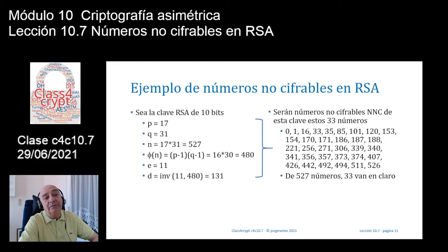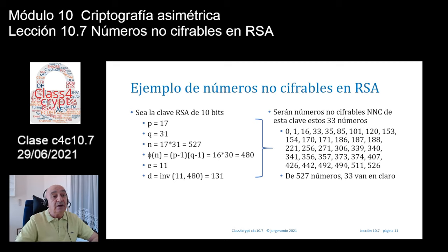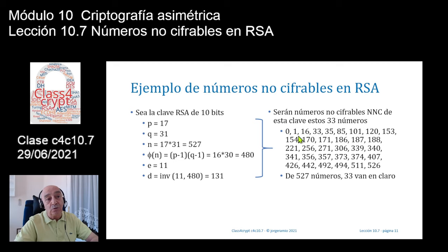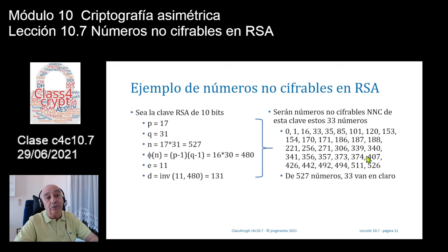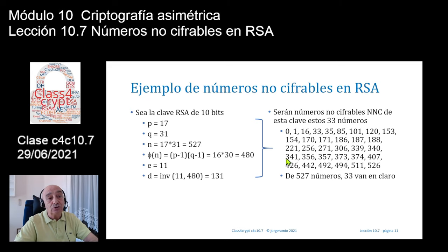Para esta clave, que luego lo veremos con el software GenRSA, tenemos un conjunto de números no cifrables. Sabemos que el número 0 es no cifrable: 0 elevado a X módulo N es 0. El 1 es no cifrable: 1 elevado a X módulo N es 1. Y también sabemos que el N-1, que es 526, elevado a X módulo 527, siempre sale 526. Pero hay otros 30 números, ya que aquí tenemos 33 números no cifrables.